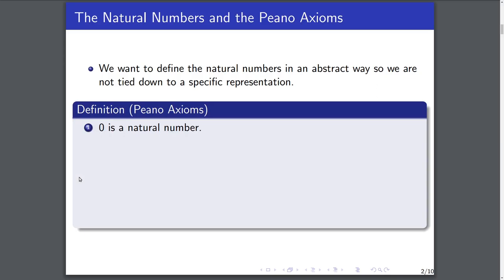Here's the first of the Peano axioms. The first axiom basically gives us at least one number that's guaranteed to exist, and we're going to call that natural number 0. We could of course put anything we want here — we just have one number, which we'll call 0 in this series, to say that's the first natural number.